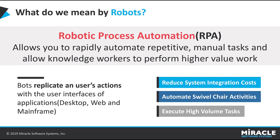RPA technology, sometimes called a software robot or bot, mimics human interaction — things like logging into applications, entering data, calculating and completing tasks, and logging out. It is a solution to automate the day-to-day manual tasks performed by configuration analysts.